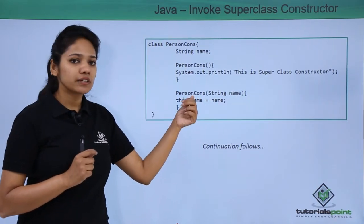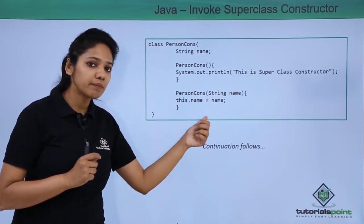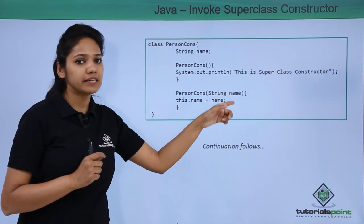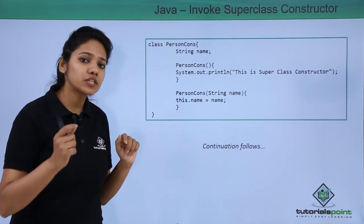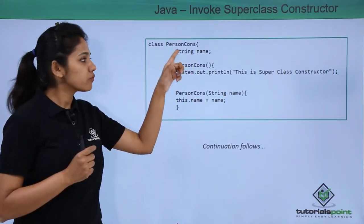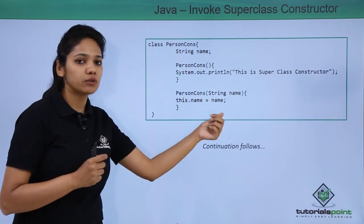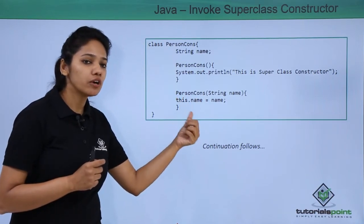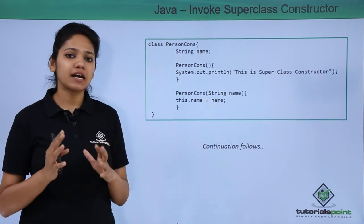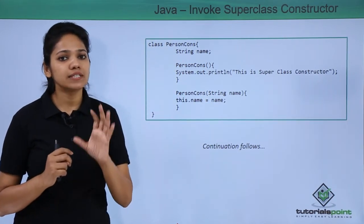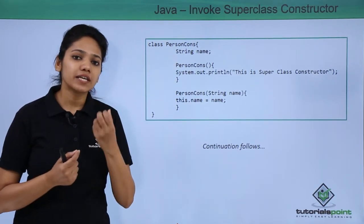The second constructor uses the same class name and in its parameter declares a String variable called name. This name is a local variable to the constructor and needs to be differentiated from the instance variable. For this purpose we use the this keyword: this.name = name, where this.name refers to the instance variable and name refers to the local variable.